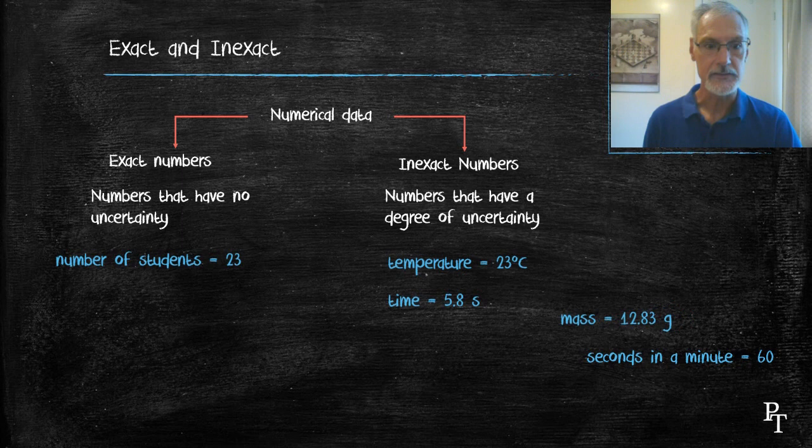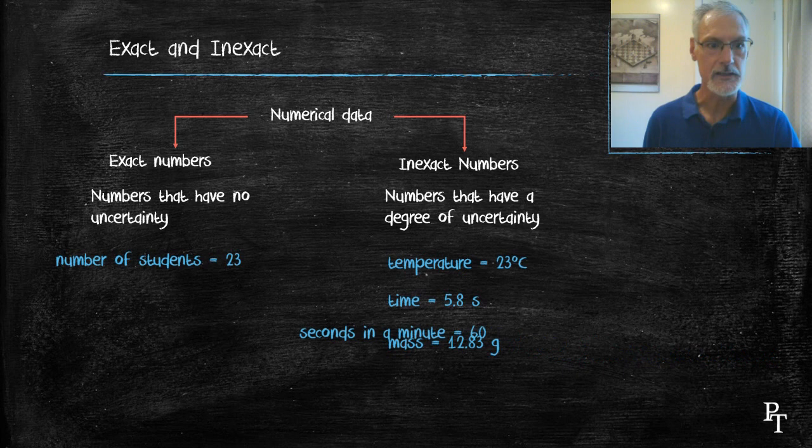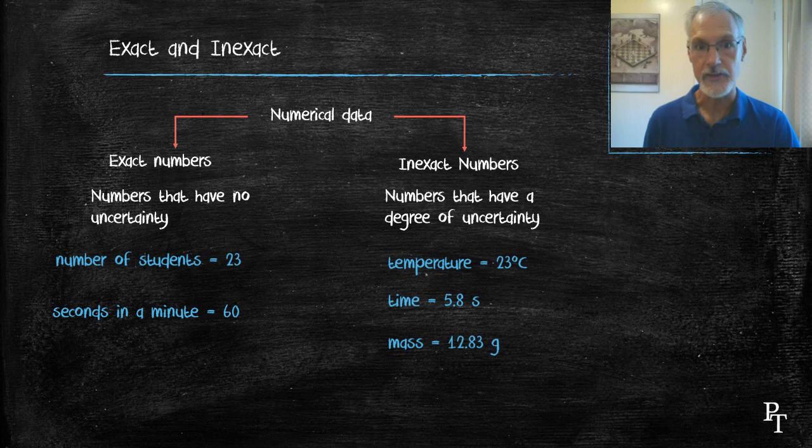The mass of an object is also an exact number. However, the number of seconds in a minute is exactly 60. That's a defined quantity. So we have data for which there is no uncertainty and data for which there is some uncertainty.